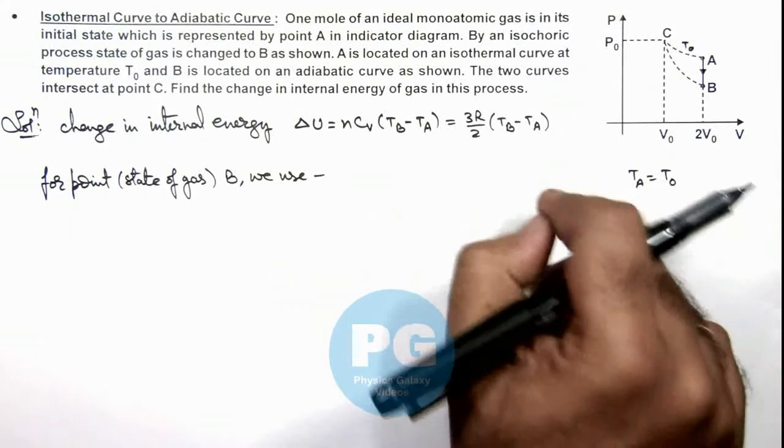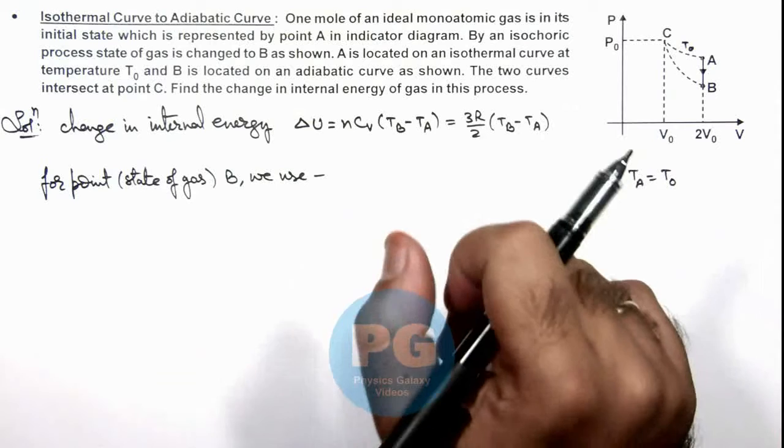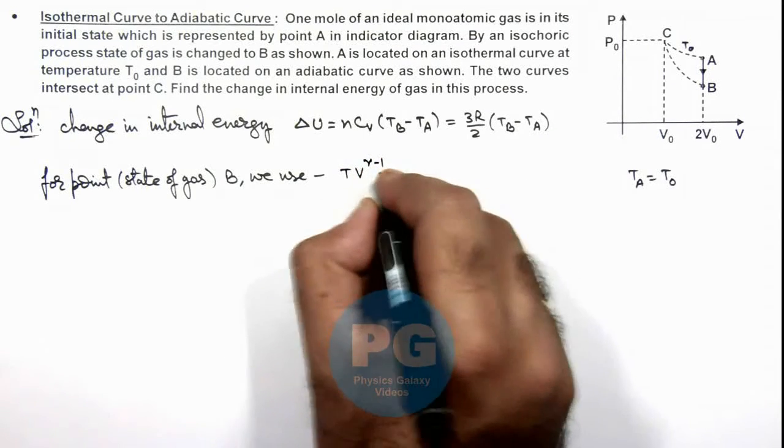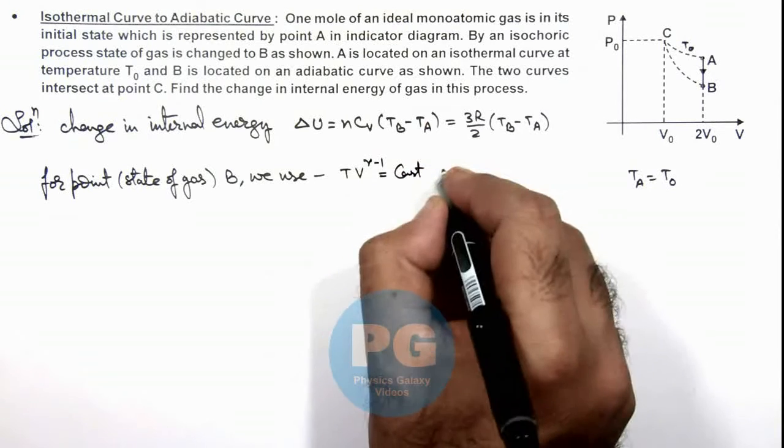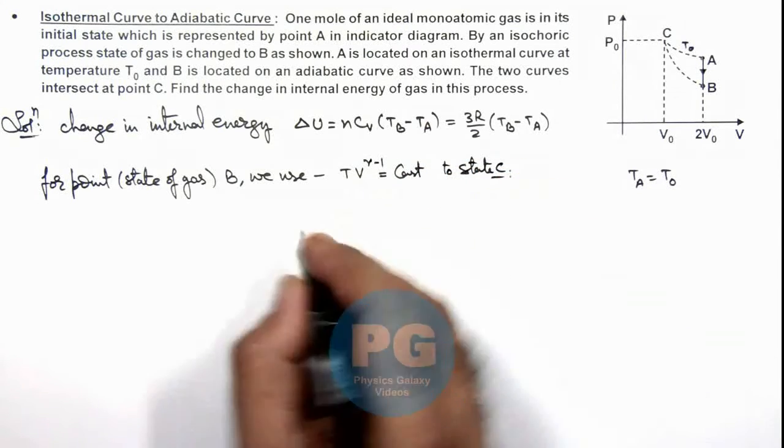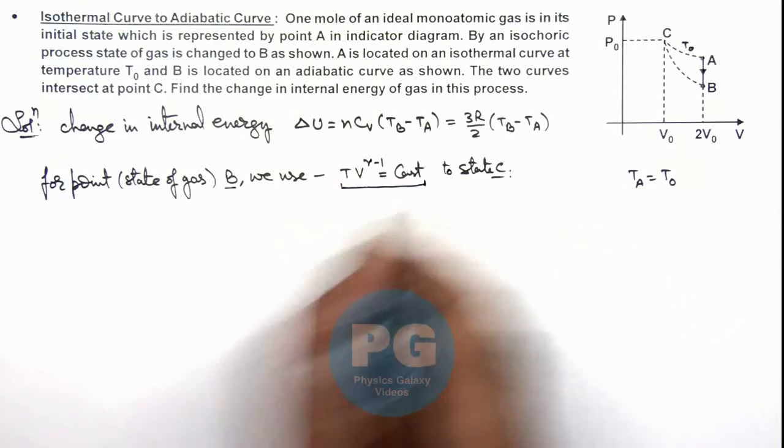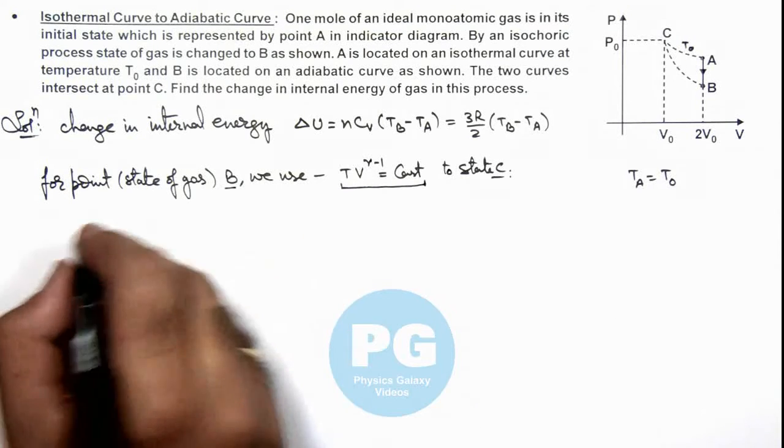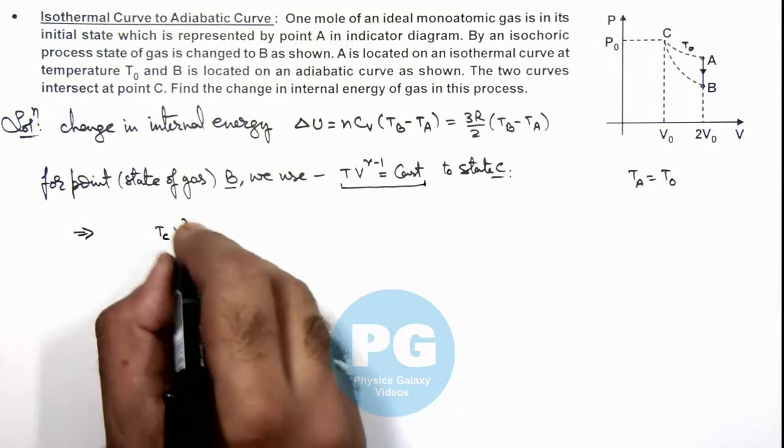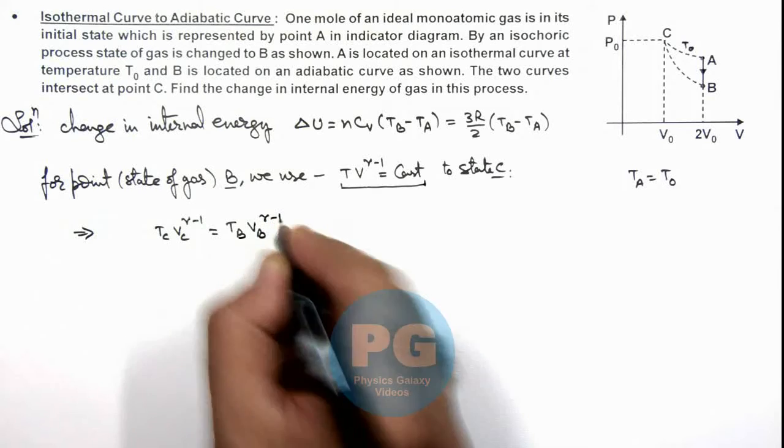We use T·V^(γ-1) is constant from B to C. This temperature-volume relationship will hold. So this gives us TC·VC^(γ-1) equals TB·VB^(γ-1).